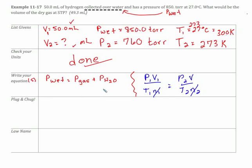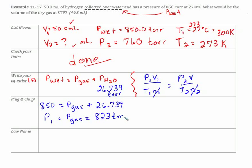Alright, so let's first find our gas. I had to look that up. My partial pressure of water at 27 degrees Celsius. I looked that up online. It was 26.739 torr. So now I have 850 for my wet pressure is my partial pressure of my gas plus 26.739 which means P1 in other words the original gas that I was after if I did my little algebra correctly is 823 torr.